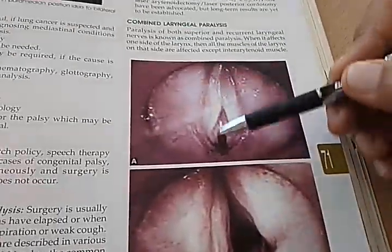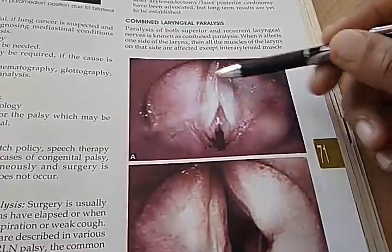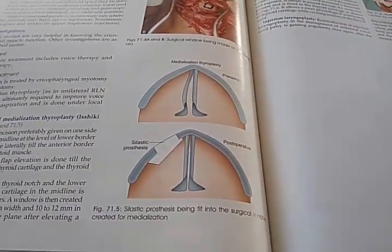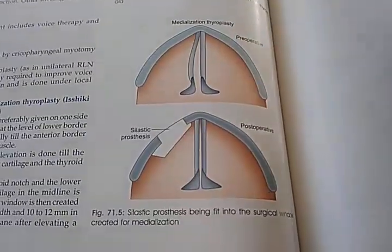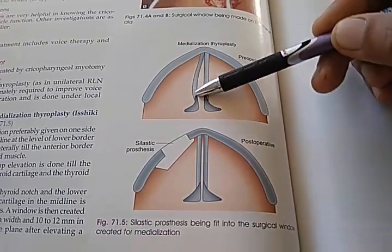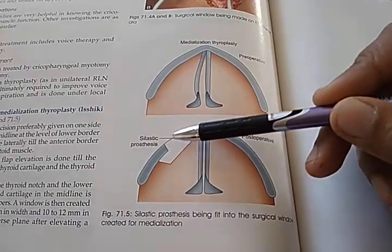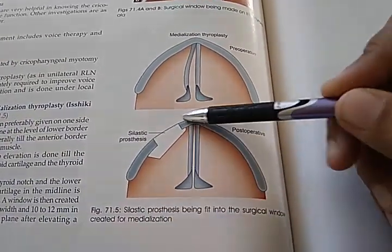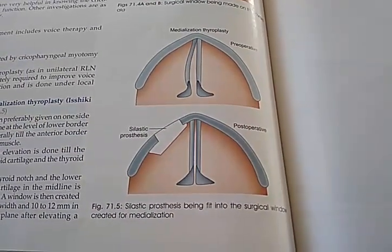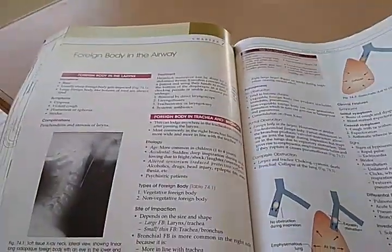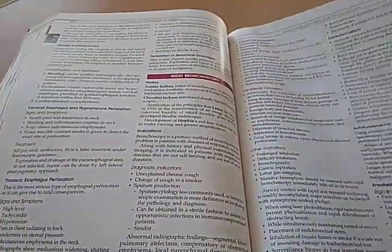This looks more like Reinke's edema or something. There is also a prosthesis shown — this one is slightly lateral, like paramedian. They are putting some Gelastic prosthesis so that it becomes medial — this is medialization of the vocal folds. Let's run through neoplasms of larynx and foreign body in the airway — so many gross images.